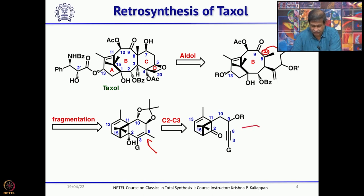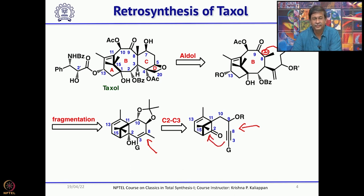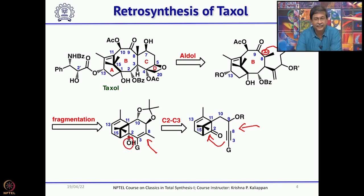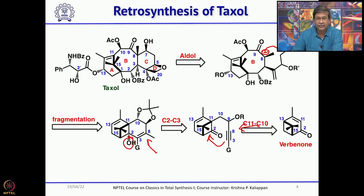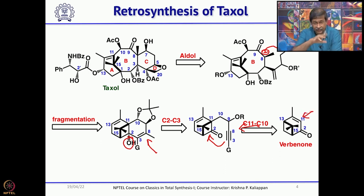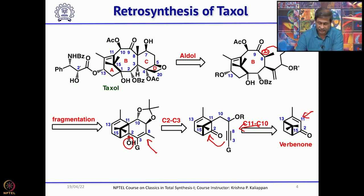What you want to do is a 1,4-addition with lithium dimethyl cuprate — the Gilman reagent — then that anion can intramolecularly attack the carbonyl group. That is how you generate the hydroxyl group required for the fragmentation. This can be obtained from verbenone. First, you do the alkylation, then you do the key reaction — the 1,3-alkyl shift — which is very important, and only then will you get the eight-membered ring.